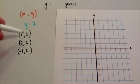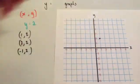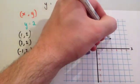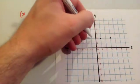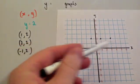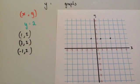So let's plot them. 1, 2, 3, 2, minus 1, 2. You'll notice that all of those three points are in a horizontal line. So if you were to get your ruler and draw a horizontal line through them, it would look something like this.